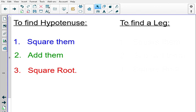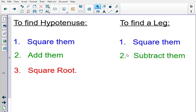Now, if you're looking for a leg, the first step is still the same. You're going to square them. Now, here's the difference. If you're looking for a hypotenuse, we added them. If I'm looking for a leg, what I'm going to do is to subtract them, subtract the two numbers. Once I do that, I'm going to find the square root of the difference, and the square root of that difference will be the length of that missing leg.